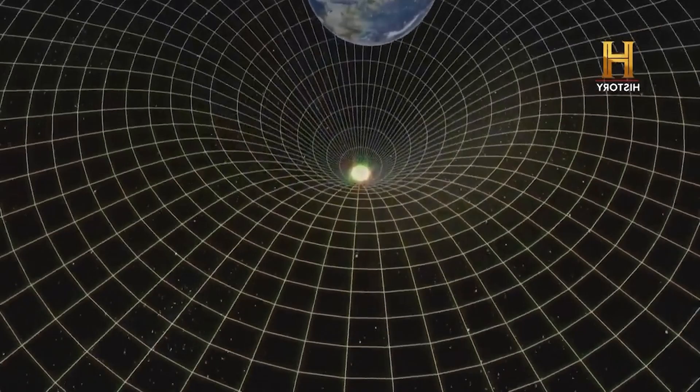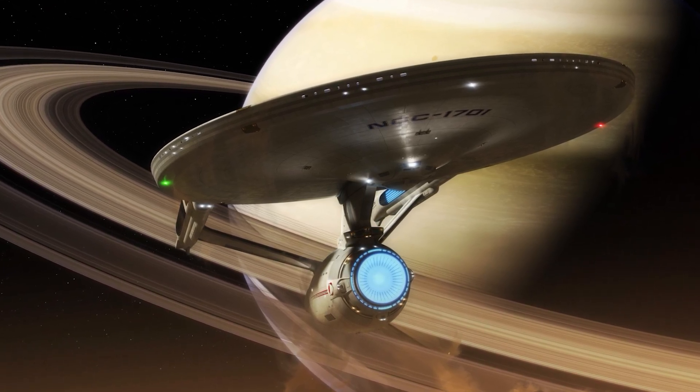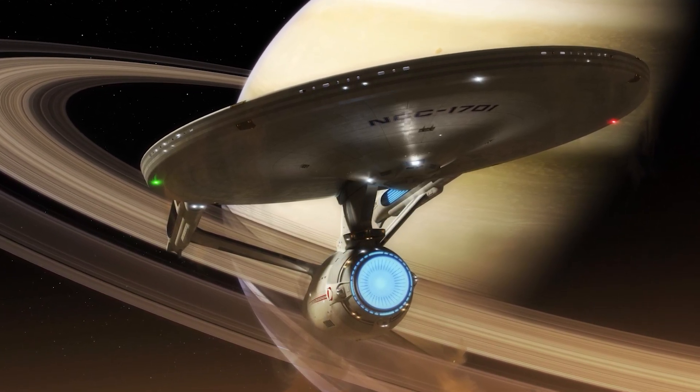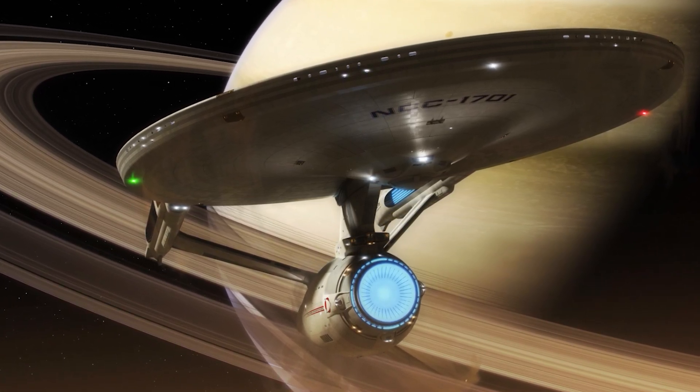The Enterprise in Star Trek uses a warp drive that generates a warp bubble around the ship. This allows the ship to move locally at modest speeds while warping space-time, maintaining synchronization between its starting point and destination.